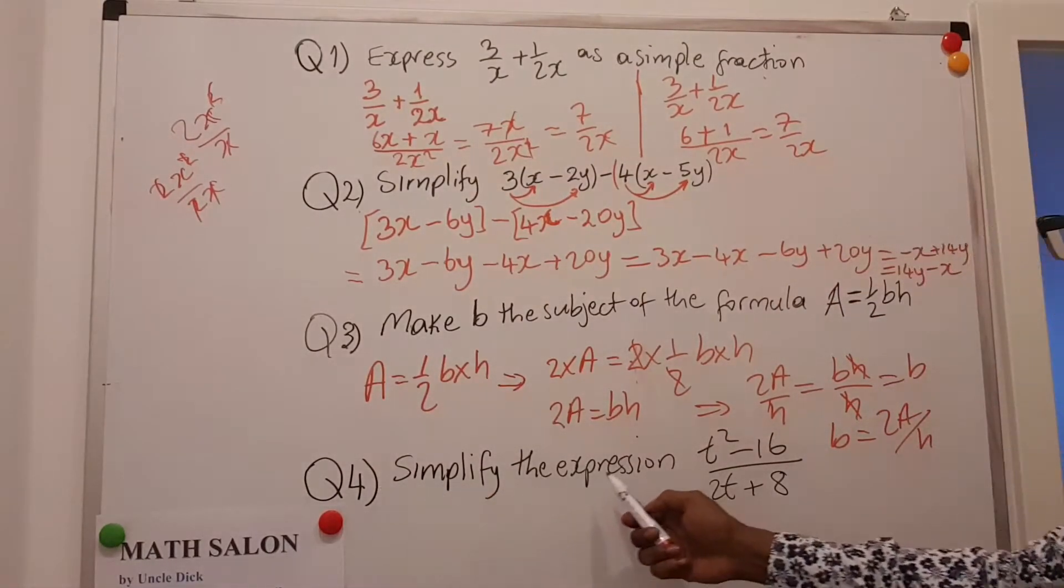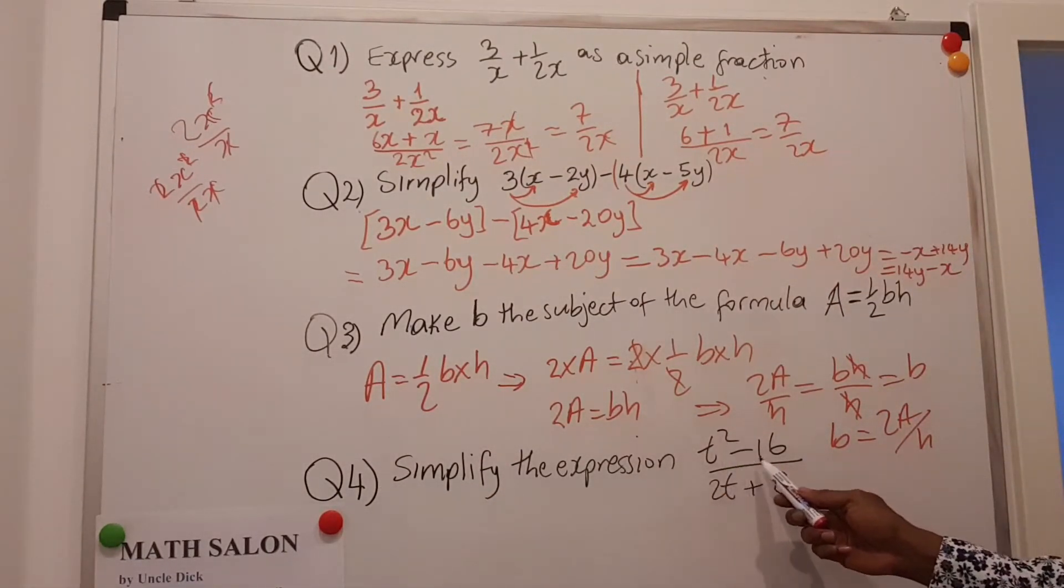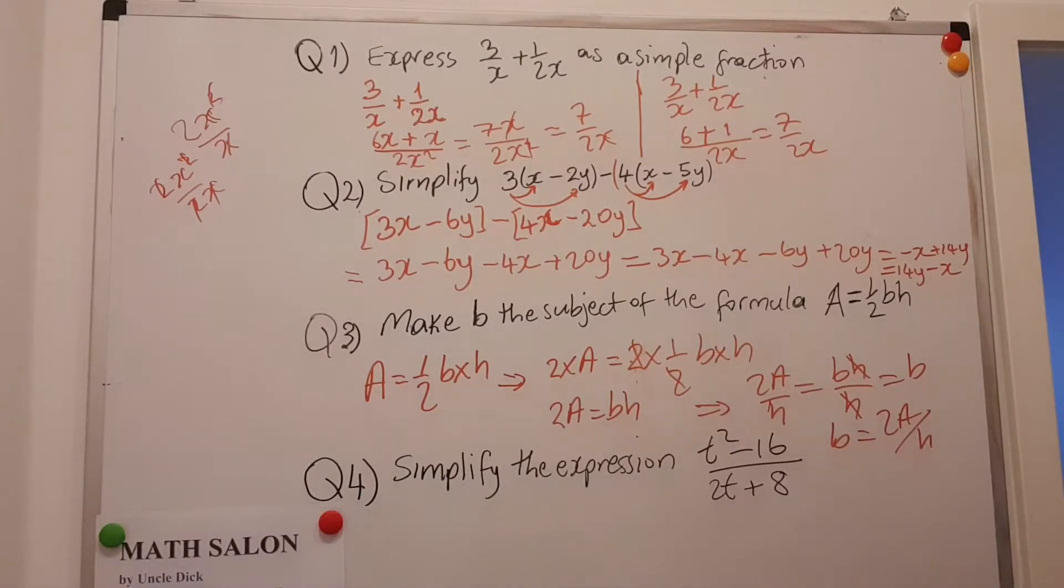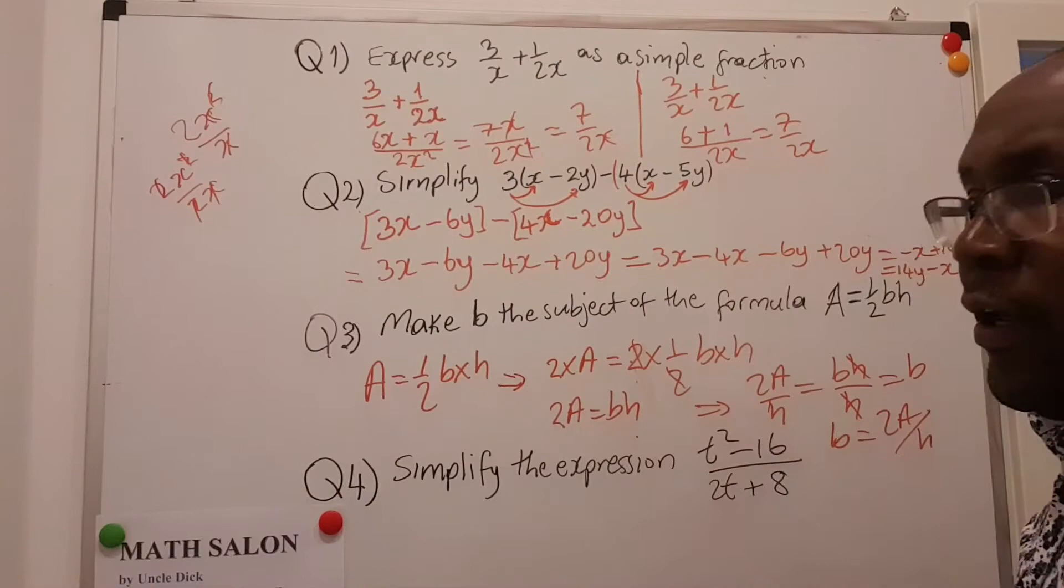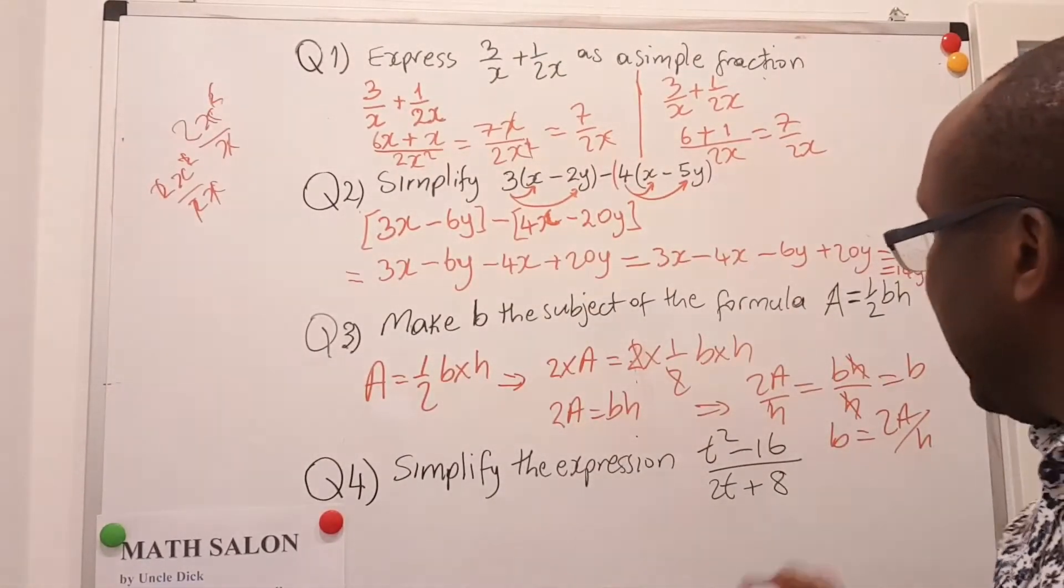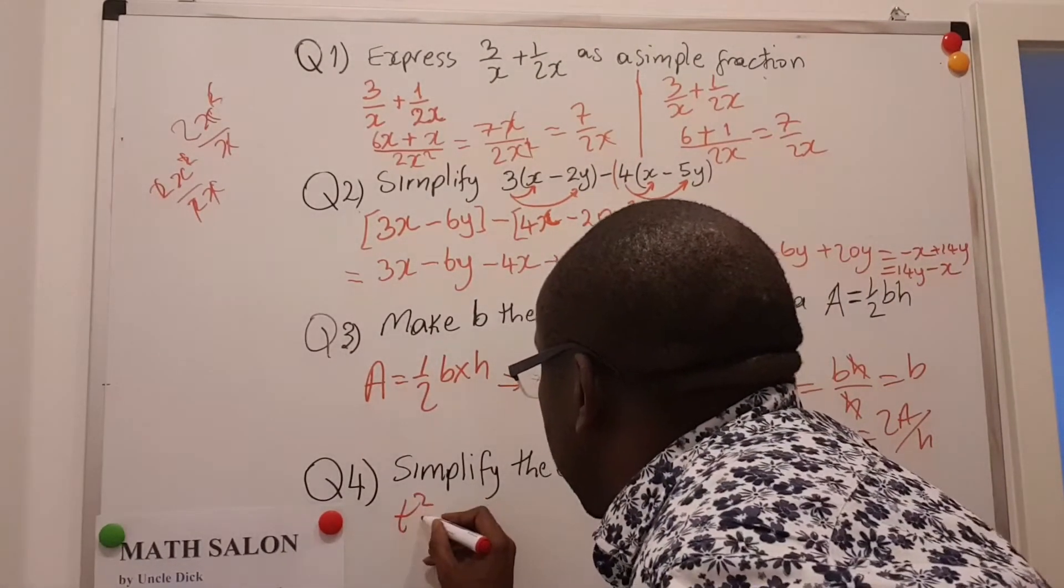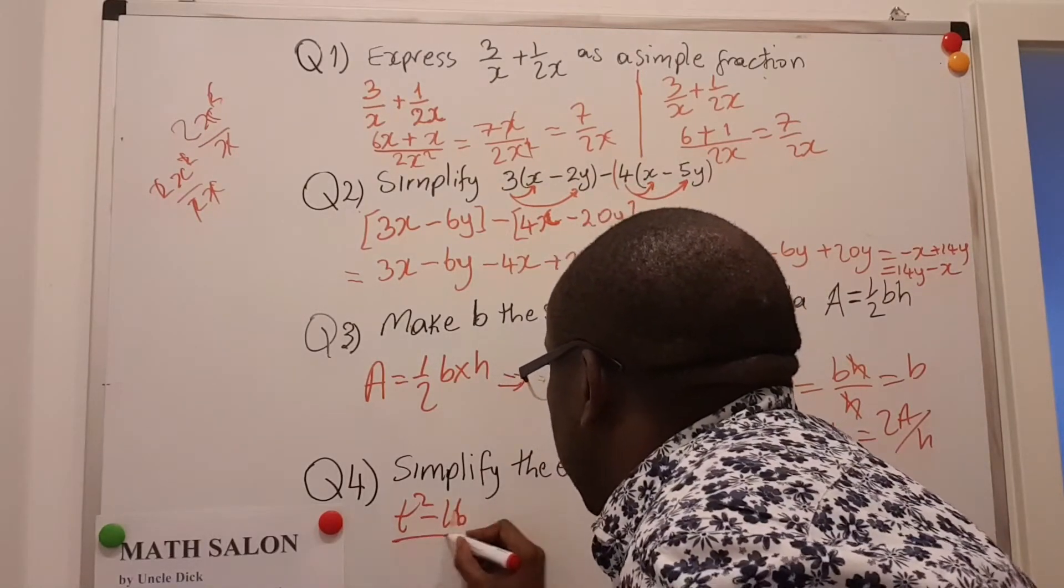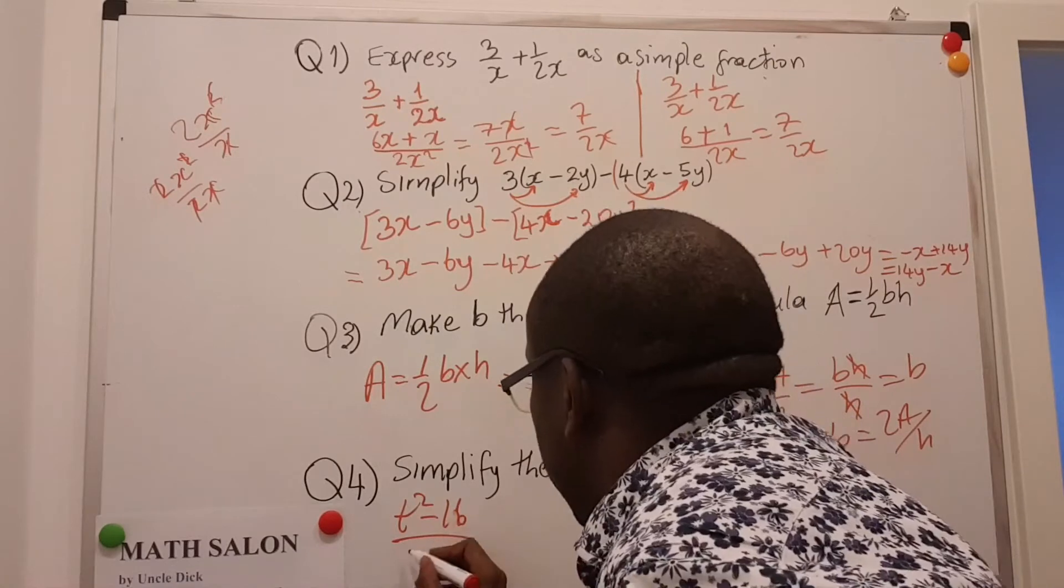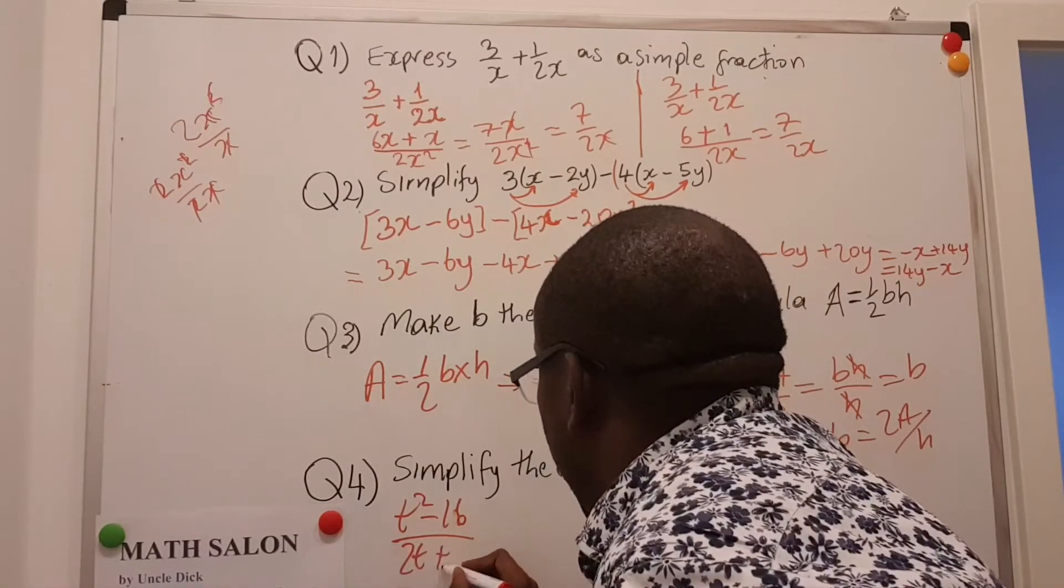The last one says simplify the expression: T squared minus 16 divided by 2T plus 8. Here we have to look at possible factors that we can get out of this. So let's say T squared minus 16 divided by 2T plus 8.